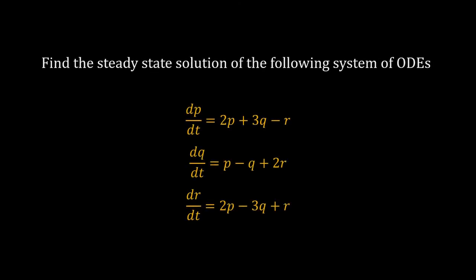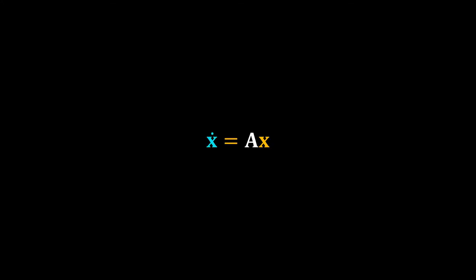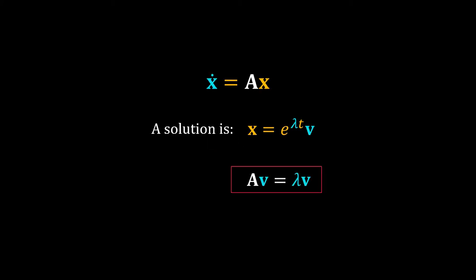Find the steady state for this system of ODEs. Back to our system of ODEs. Now we will address the second question: stability analysis. For that, we will derive the generic solution for a linear homogeneous system of ODEs. We have a theorem that says a solution of a linear homogeneous system of ODEs is e to the power λt multiplied by v, where λ is an eigenvalue of the coefficient matrix and v is the corresponding eigenvector.